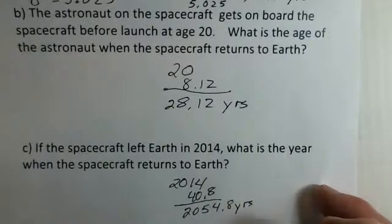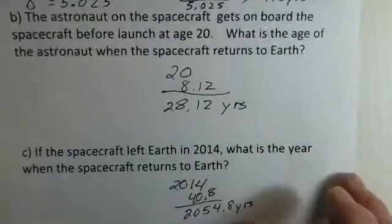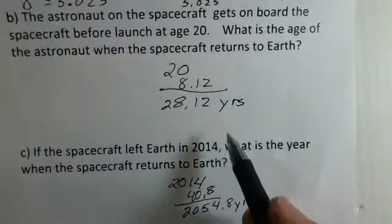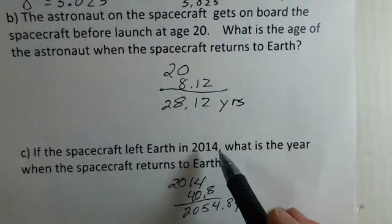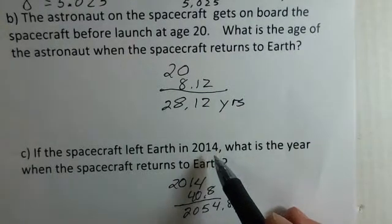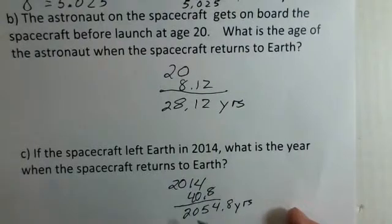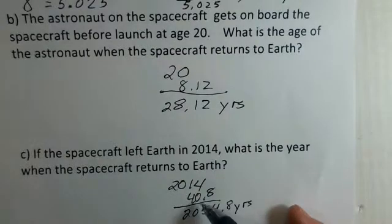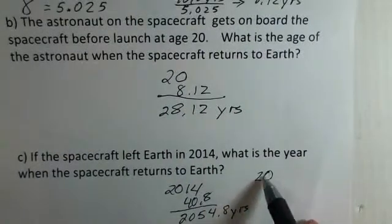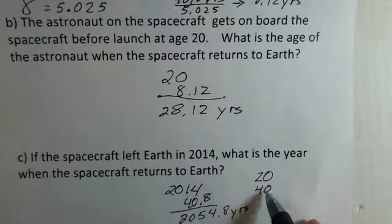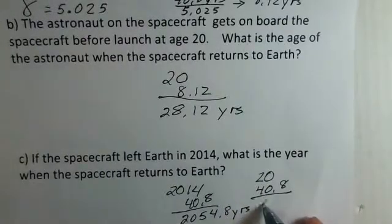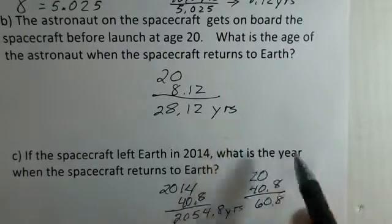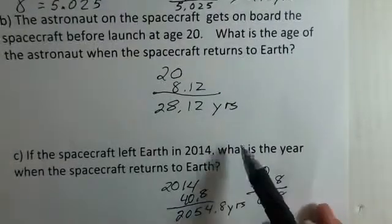And this is a little bit amazing. How old will the astronaut be? 28 years. And for our astronaut, it was born in 1994, age 20 in 2014. Here it is, 2054. The astronaut is age 28. How old would this astronaut's twin be? Well, if the twin was 20 when the astronaut left, from the twin's point of view, 40.8 years have elapsed, the twin will be almost 61 years old. The astronaut twin would only be 28 years old. There's a definite difference.